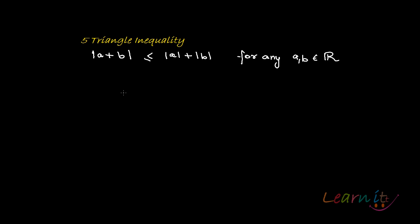Basically, what we are trying to say is — if you look at it from a vectors point of view — you have a vector A and then you have a vector B in this direction, and this will be essentially your A plus B. So the distance here will always be less than or equal to the sum of the individual distances. That's what this property is talking about.